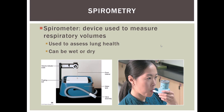Those are our four respiratory processes. The other thing you're going to get a chance to do in lab is spirometry. These are two versions of a spirometer — a wet spirometer and a dry handheld spirometer. Essentially, this measures different respiratory volumes. We can look at lung health: are you able to inhale a lot, exhale a lot, how much air is filling your lungs?